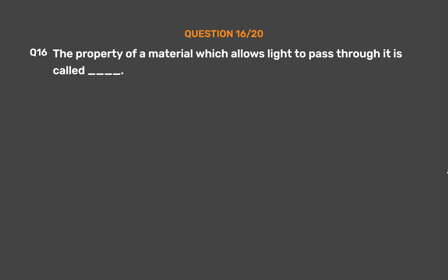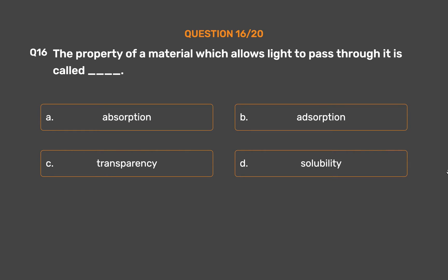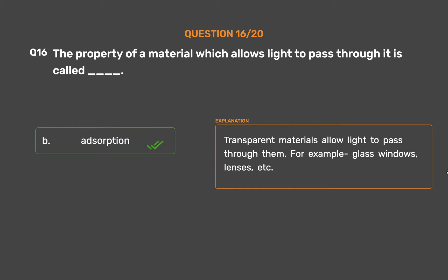Question number 16. The property of a material which allows light to pass through it is called ___. Option A: Absorption. Option B: Adsorption. Option C: Transparency. Option D: Solubility. The correct answer is Option B, Adsorption. Transparent materials allow light to pass through them — for example, glass windows, lenses, etc.